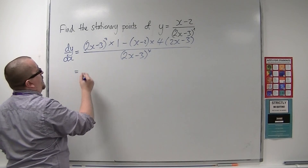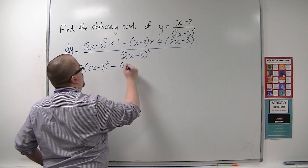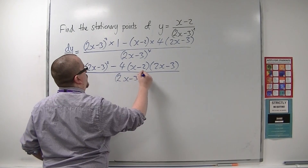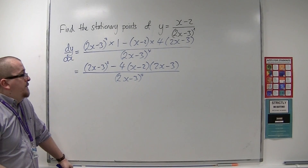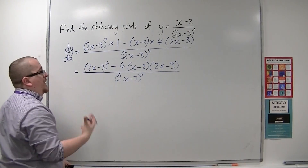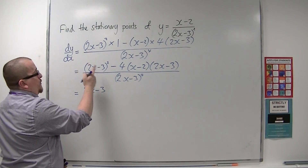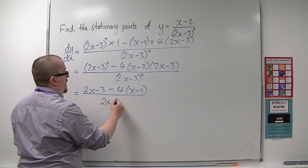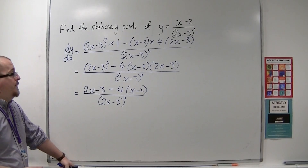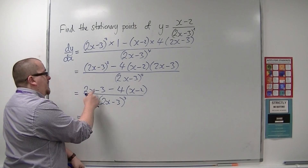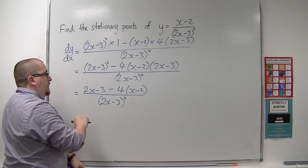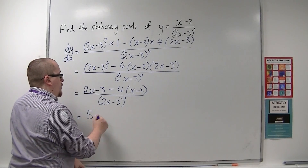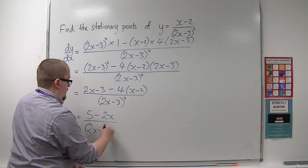Tidying this up, I have 2x minus 3 squared, take away 4 lots of x minus 2 times 2x minus 3, divided by 2x minus 3 to the 4. I'm going to divide through by 2x minus 3, because all three terms have that as a factor. That leaves a singular 2x minus 3 on the first term, and take away 4 lots of x minus 2 on the second, because the 2x minus 3 cancels. Expanding gives 2x minus 4x, which makes minus 2x, and minus 3 take away 4 lots of minus 2, so plus 8, giving 5 minus 2x all over 2x minus 3 cubed.